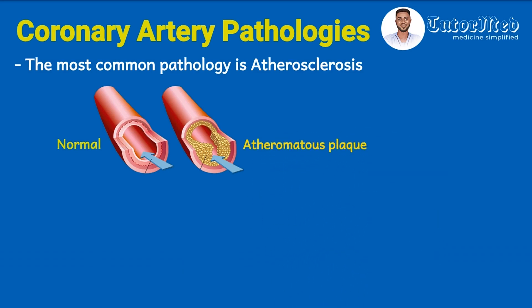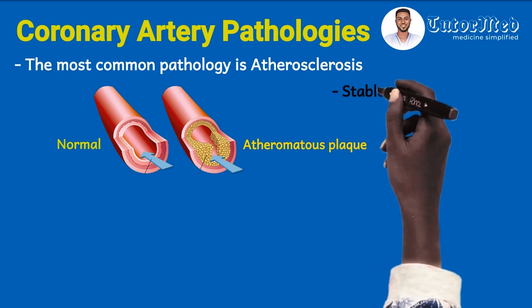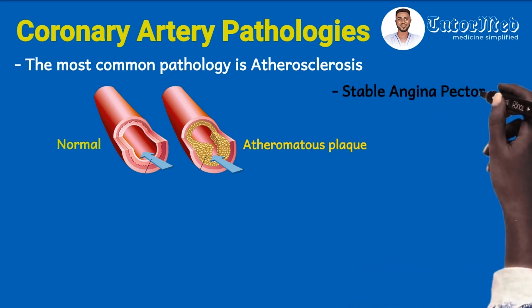When the size of the plaque is able to occlude at least 70% of the lumen size, chest discomfort may ensue especially during exertion, emotional distress, or duress — states which increase myocardial oxygen demand. When this happens, a condition called stable angina pectoris is diagnosed or suspected.